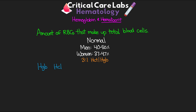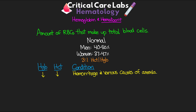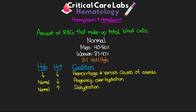To understand the relationship between hematocrit and hemoglobin, I'm going to draw out a table. If both hemoglobin and hematocrit are low, this could be hemorrhage or various causes of anemia. If hemoglobin is normal but hematocrit is low, this could be the result of either pregnancy or overhydration. If hemoglobin is normal but hematocrit is high, then this would be the opposite — dehydration. And if both hemoglobin and hematocrit are high, this could be a low oxygen availability state — think COPD, smokers with fibrosis, or altitude.